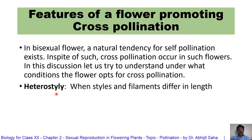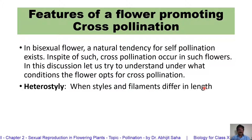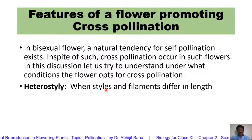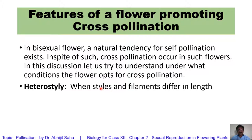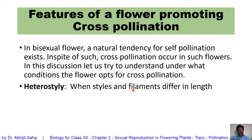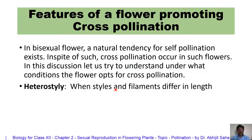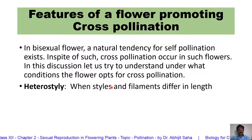Number one is heterostyly. Hetero means different — when styles and filaments differ in their length. Naturally, if styles and filaments differ in length, the anther and stigma will not lie on the same level. Even if the anther lies a bit above the level of the stigma, pollination is possible. But if they differ markedly in their length, then self-pollination may not be possible — for example, if filaments are too small and styles are too long.